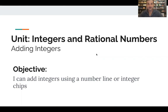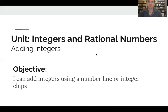Welcome everybody back to our integers and rational numbers unit. Today we're going to be talking about adding integers. We talked about what integers are — numbers that don't have any fractional component, positive, negative, zero, anything with nothing after the decimal. Today we're going to learn how to add them using two different models: adding integers on a number line and using integer chips.